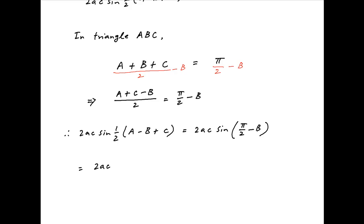The right-hand side is equal to 2AC times cos B which can also be written as 2AC times A square plus C square minus B square upon 2AC. 2AC cancels across the numerator and the denominator and the right-hand side is equal to A square plus C square minus B square and this is the desired result.